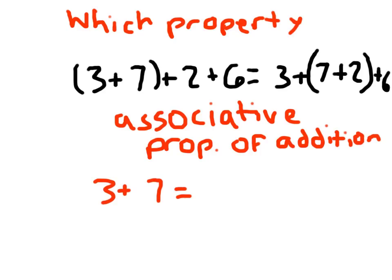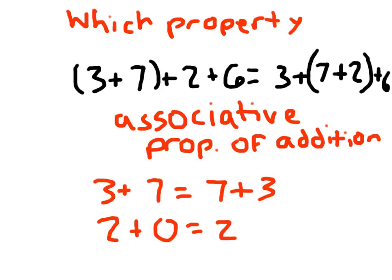3 plus 7 equals 7 plus 3 is the commutative property; 2 plus 0 equals 2 is the zero property. Good job. Hopefully now you know those properties of addition, and those are going to help you as you encounter more and more addition problems.